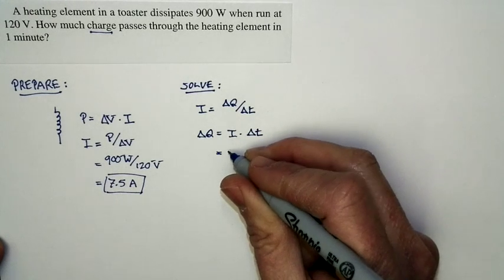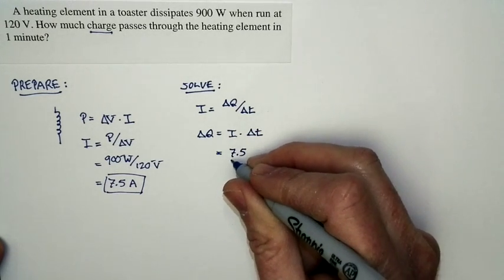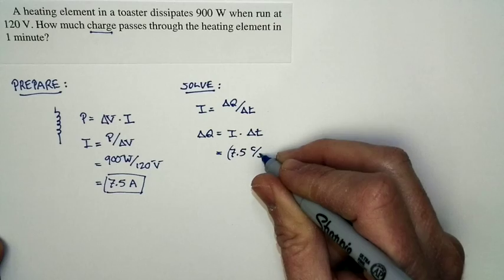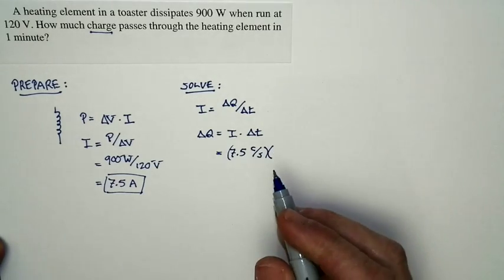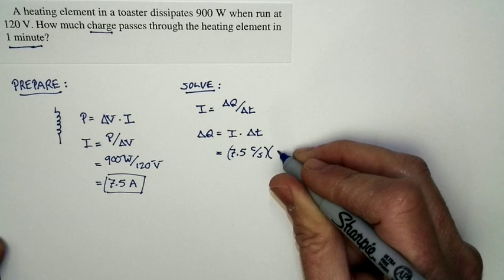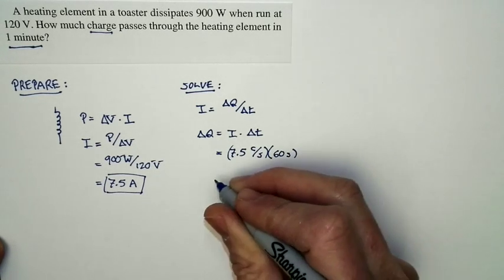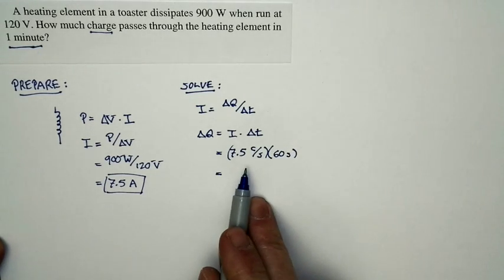And that makes sense because the current is 7.5 amps, but an amp is a coulomb per second. And I multiply that by the time interval, which is one minute or 60 seconds. I have 7.5 coulombs per second. That's a lot of charge every second.